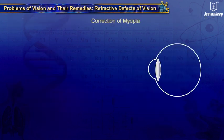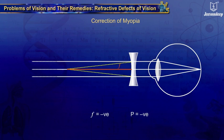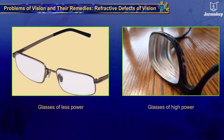Myopia or Nearsightedness can be corrected using a concave lens of suitable focal length. The focal length of a concave lens is negative, so the power of spectacles for a myopic eye is negative. Depending on the degree of the defect, the power of the concave lens is different for different eyes.